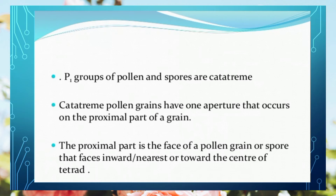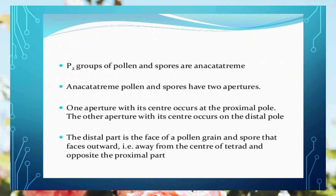The proximal end of a pollen grain or spore is the end that, before dispersal, faced the attachment side — the inner side of the pollen facing other pollens. This is the proximal end. Its opposite is the distal end. An aperture on the proximal face is scientifically termed 'katadrome', and the symbol P1 is used.